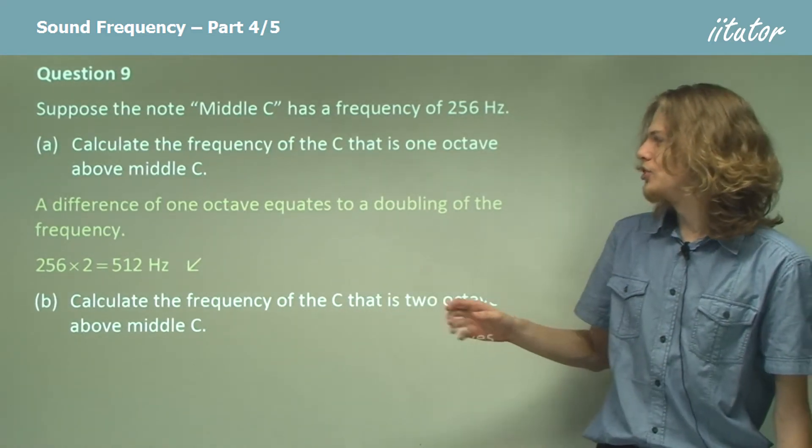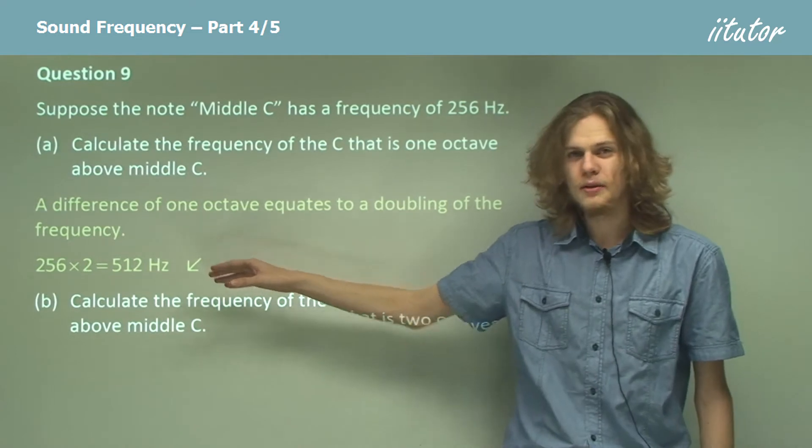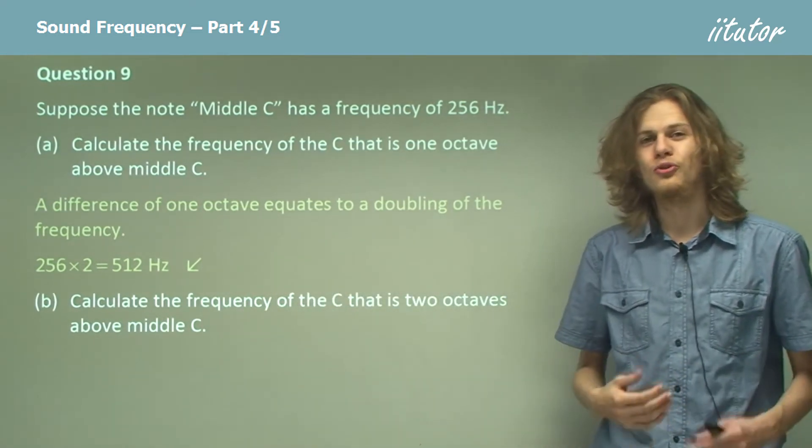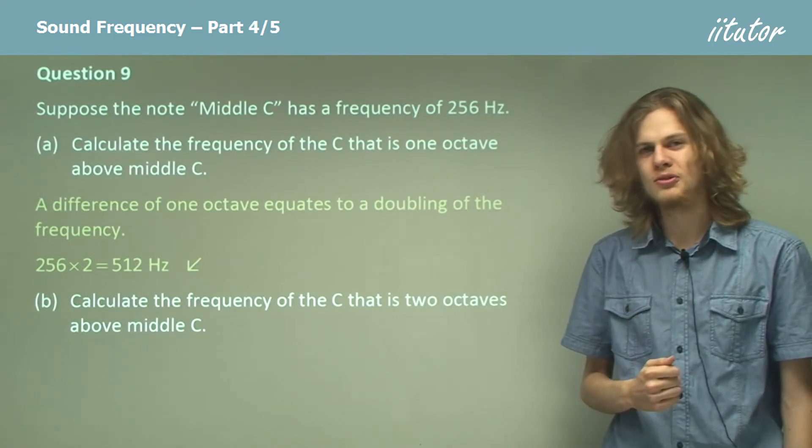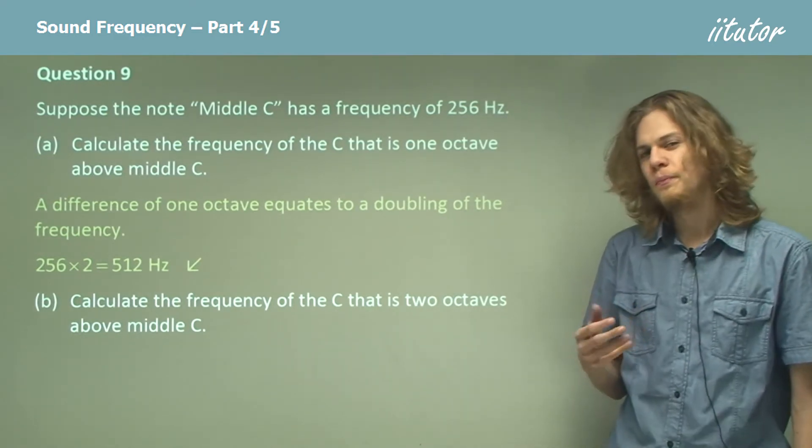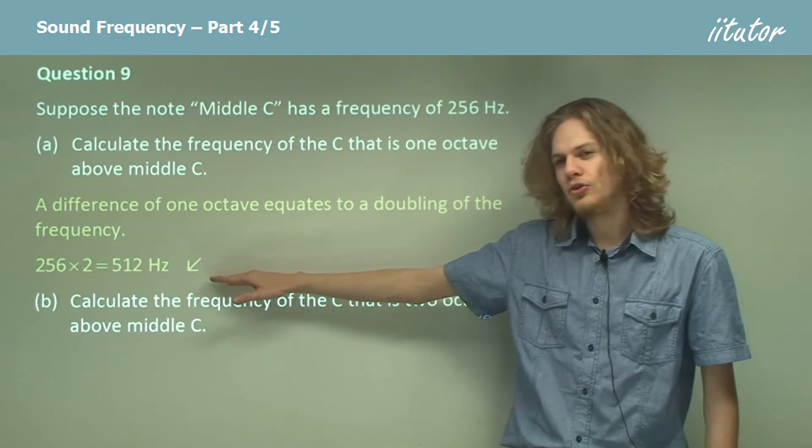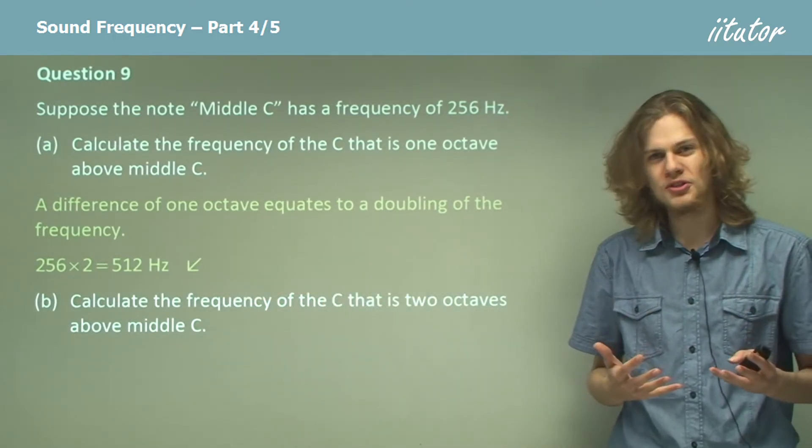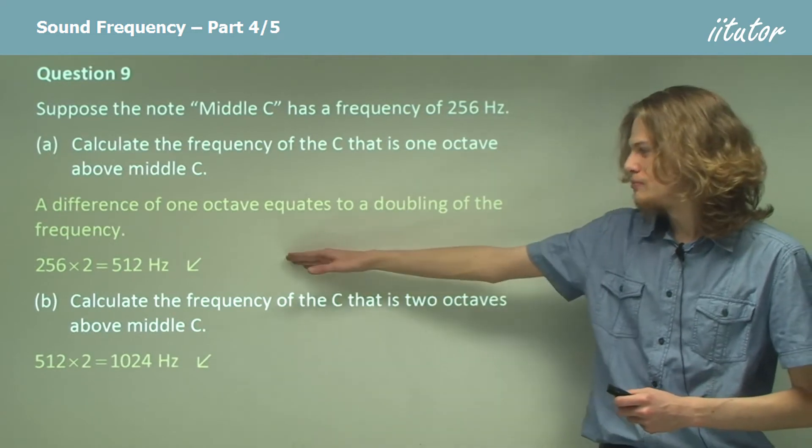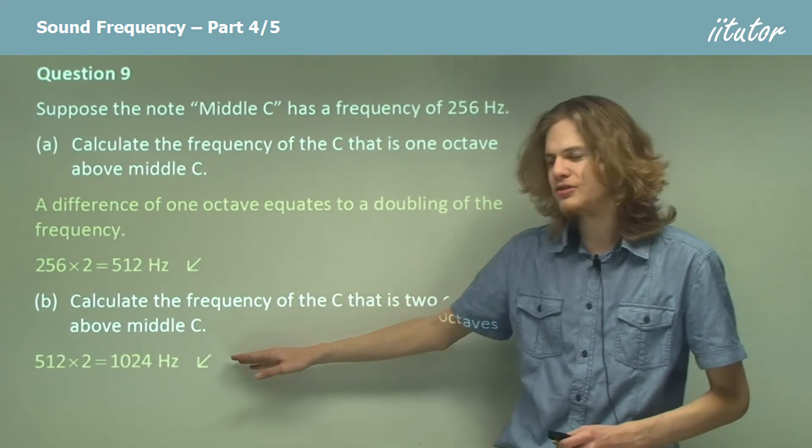If we move up 256 Hertz from this C we'll actually end up at the musical note G, which is halfway in between two C's if we look at the frequency. So in fact what we need to do is we need to move up one octave from here, and when we move up an octave we double the frequency. 512 Hertz times 2 is 1024 Hertz.